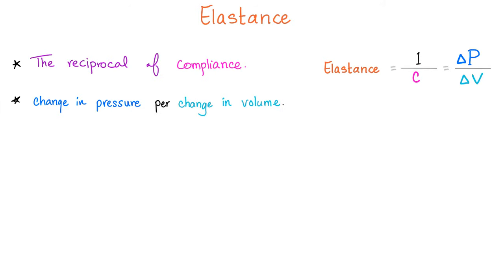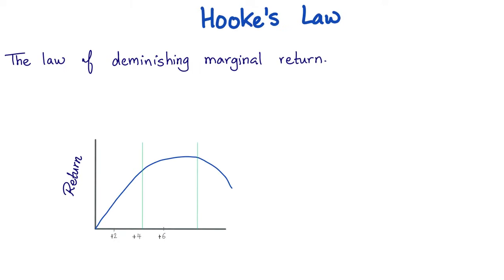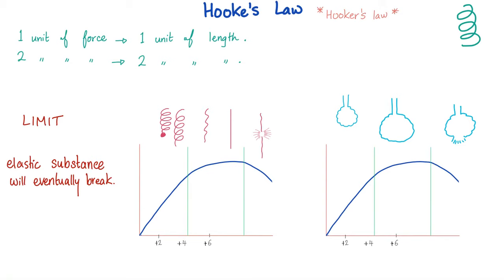Compliance is ΔV/ΔP; elastance is the exact opposite — the elastic recoil. Hooke's law: similar to the law of diminishing marginal returns. If you give a spring one unit of force, it gives one unit of length; two units of force gives two units of length — until you stretch it too far and it ruptures. There is a limit beyond which an elastic substance will eventually break. Same with the alveoli: give it one unit of force and it expands; too much force and it ruptures.